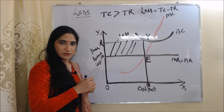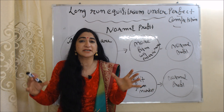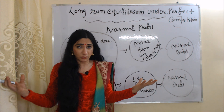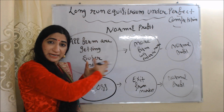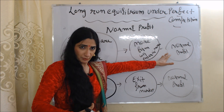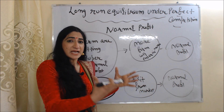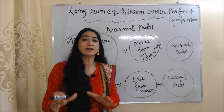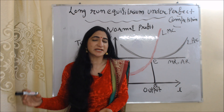Now we are going to talk about long-run equilibrium under a perfect competition market. In the long run, all firms will get normal profit. Why? Suppose in the short run, all firms are getting super normal profit. Attracted by this, more firms will enter the market; as supply increases, profit gets divided, and all firms come to normal profit. On the other hand, if firms are getting losses, some firms will exit the market; as supply falls, profit increases, and again all firms come to normal profit.